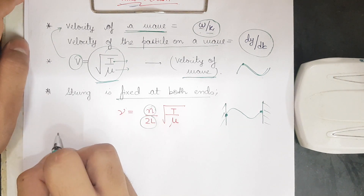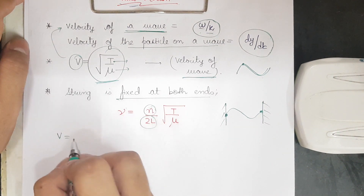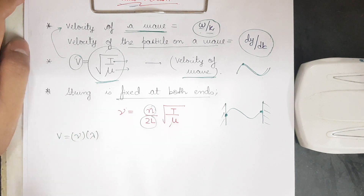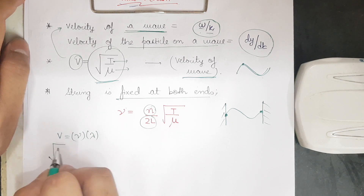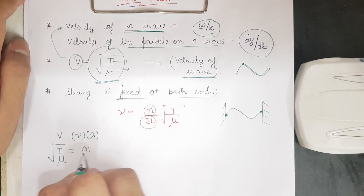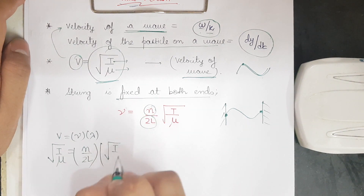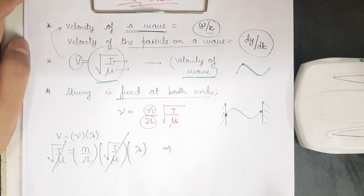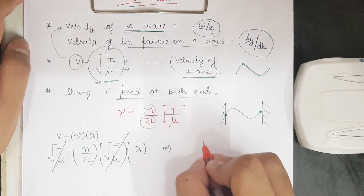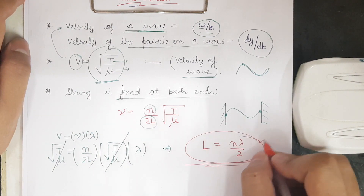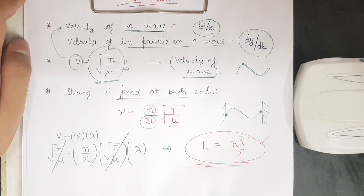We know that velocity equals frequency times wavelength λ. Since velocity is √(T/μ) and frequency is n/(2L) × √(T/μ), we can cancel √(T/μ) from both sides to get the important result: the length of the string L = nλ/2. This is one of the most important formulas you must know.